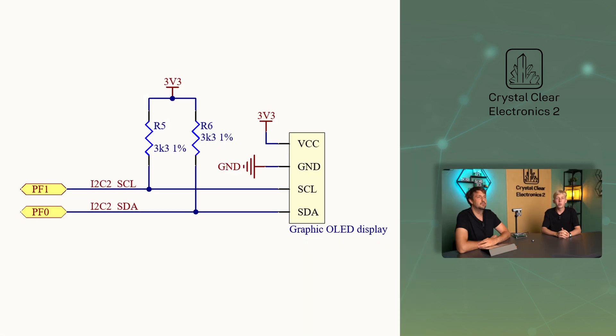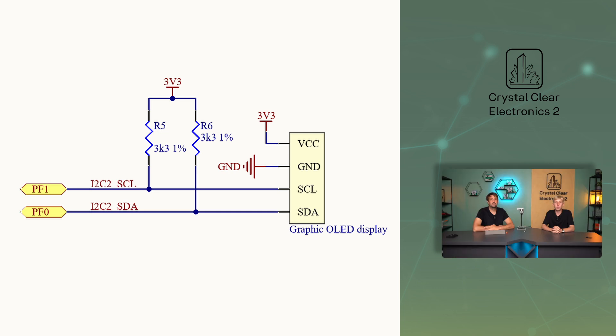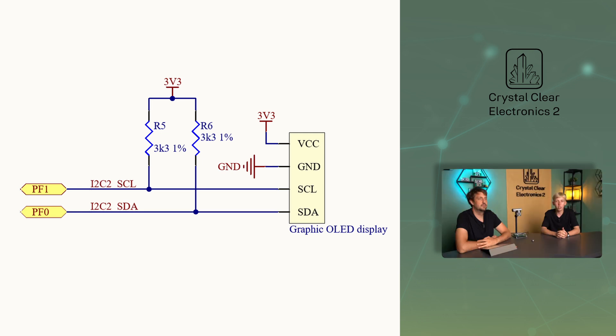The display is connected according to the schematic diagram. Connect the 3.3 volt supply voltage to the VCC leg and the common ground to GND. For communication, we will use the I2C2 peripheral of the microcontroller. So we connect the SCL leg to the PF1 leg of the microcontroller and the SDA leg to the PF0 leg of the microcontroller. In addition, the I2C data lines are connected to the supply voltage via a single pull-up resistor. The push buttons and the LEDs are connected in the usual way.